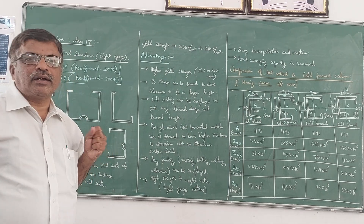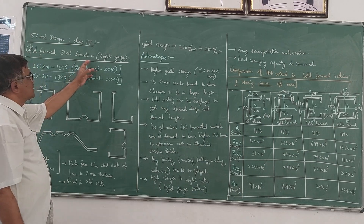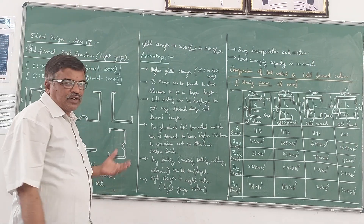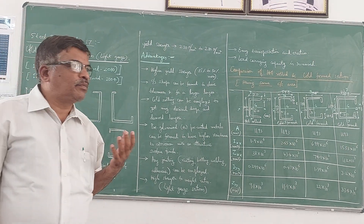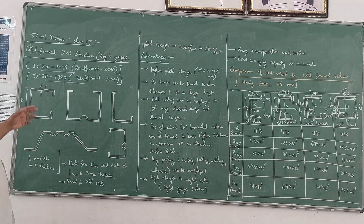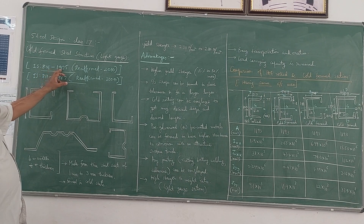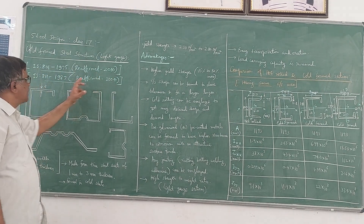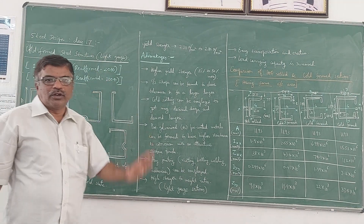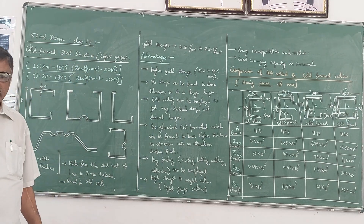We will now discuss another type of steel structures: cold form steel structures, also known as light gauge steel structures, because the weight of steel structures made up of cold form steel sections is light. This is based on two codes: IS-801 1975 (reformed in 2010) and IS-801 1987 (reformed in 2004). These two codebooks must be followed for the design of cold form steel structures.